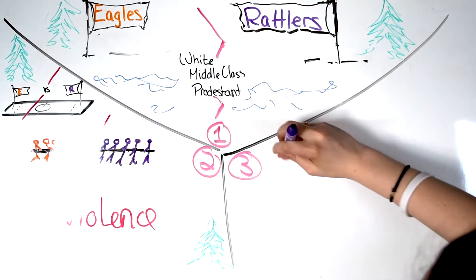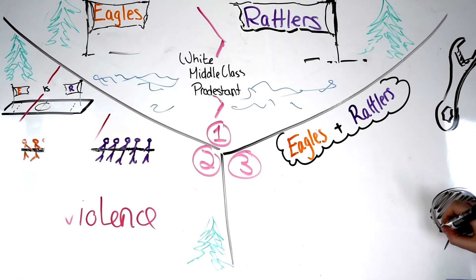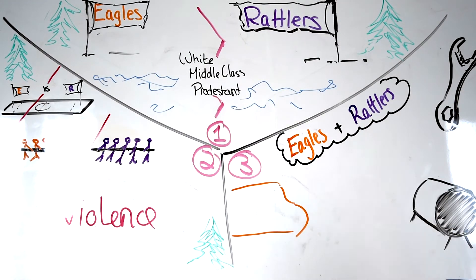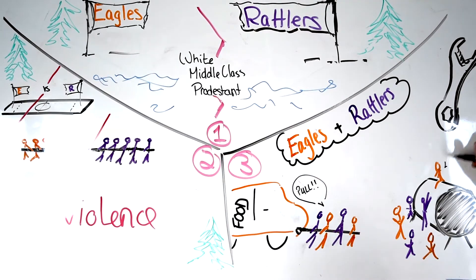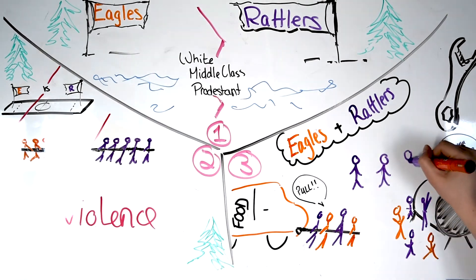In the third and final stage, groups faced barriers to common goals, such as fixing broken equipment and helping stranded food reach the campsite. These barriers could only be resolved through cooperation between both groups. As Sherif predicted,